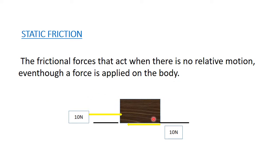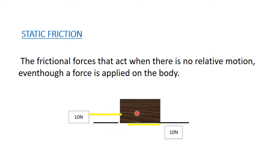Look at this picture. This block of wood has a force of 10 Newtons applied on it, but there is no relative motion — the block does not move. The reason is that when we exert 10 Newtons, the table also exerts a force on the block opposite to our applied force. That opposing force is called static friction — when the object is not in movement but a force is applied on the body.